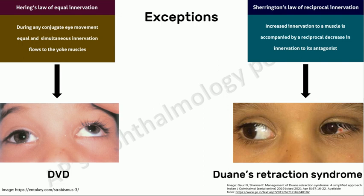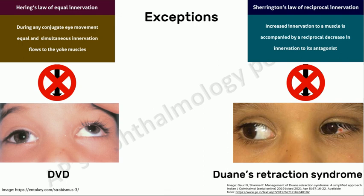These laws are not universal and do have some exceptions. The important ones are dissociated vertical deviation, which is an exception to Hering's law, and Duane's retraction syndrome, which is an exception to Sherrington's law, because the lateral rectus co-contracts with the medial rectus instead of relaxing on adduction.